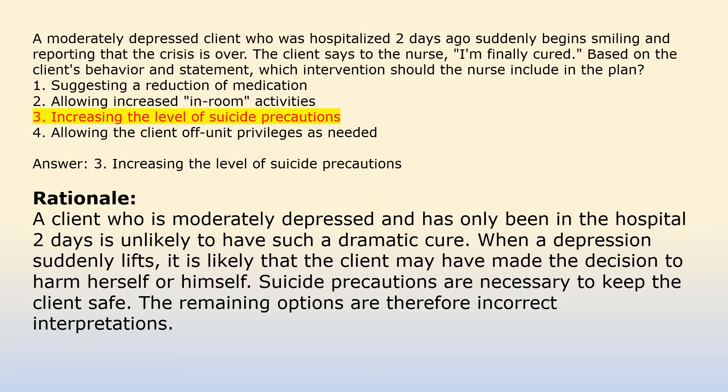Answer 3: Increasing the level of suicide precautions. Rationale: A client who is moderately depressed and has only been in the hospital 2 days is unlikely to have such a dramatic cure. When a depression suddenly lifts, it is likely that the client may have made the decision to harm herself or himself. Suicide precautions are necessary to keep the client safe. The remaining options are therefore incorrect interpretations.